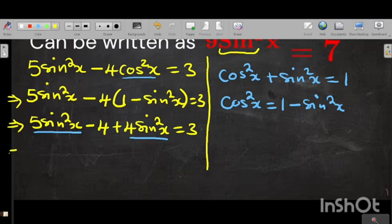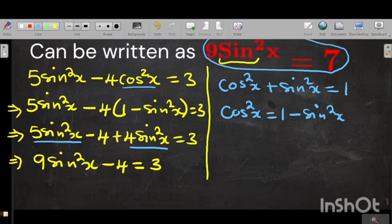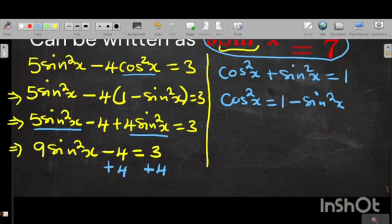So we are going to have 5 sin squared x plus 4 sin squared x will be 9 sin squared x minus 4 is equal to 3. Our aim is to have this, so you can see that we are almost there. So what we are going to do is we are going to add 4 on both sides.